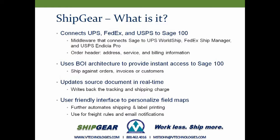If I'm shipping against a sales order, when ShipGear writes back the tracking information, it will create a comment line on the sales order with shipment information — tracking number, packages — and update the freight amount into the freight field. If I'm using an invoice as a source document, ShipGear will update Sage's actual tracking tables.